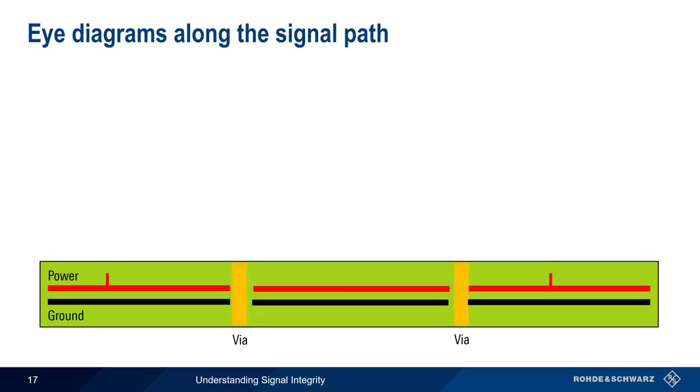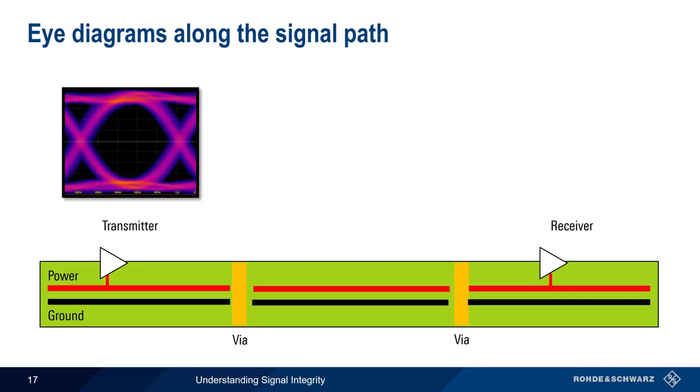Let's look at eye diagrams made at various points along a printed circuit board, between the transmitter and the receiver. At the transmitter, we see a wide, relatively open eye diagram.